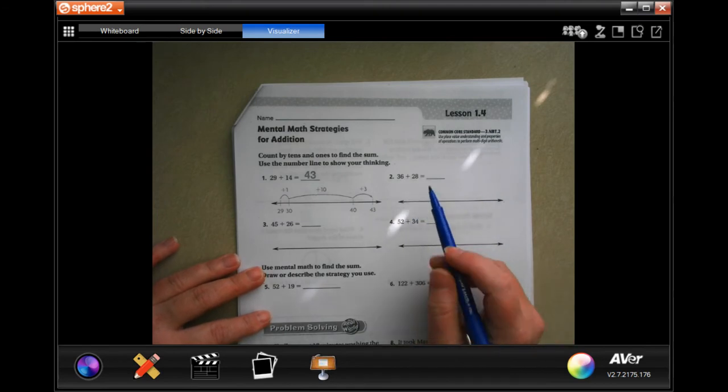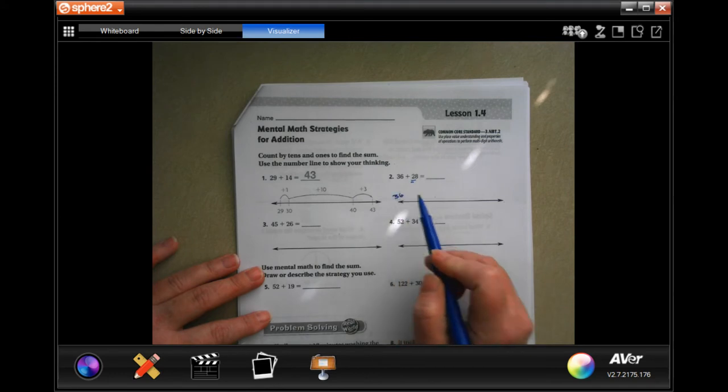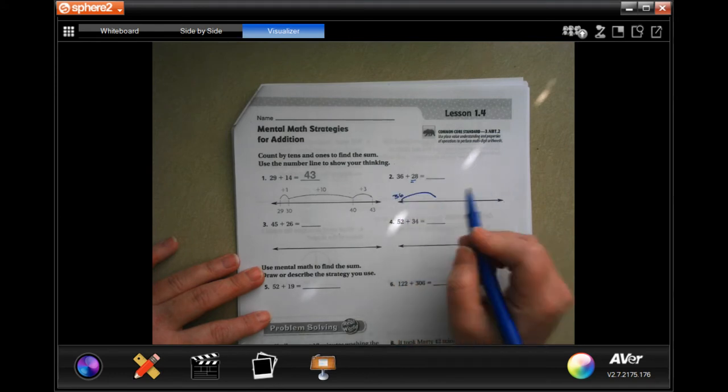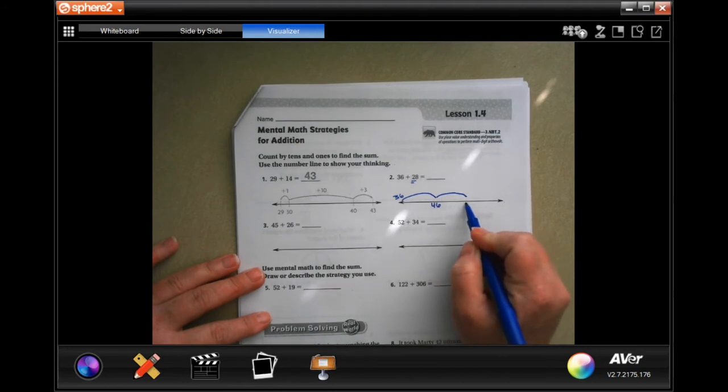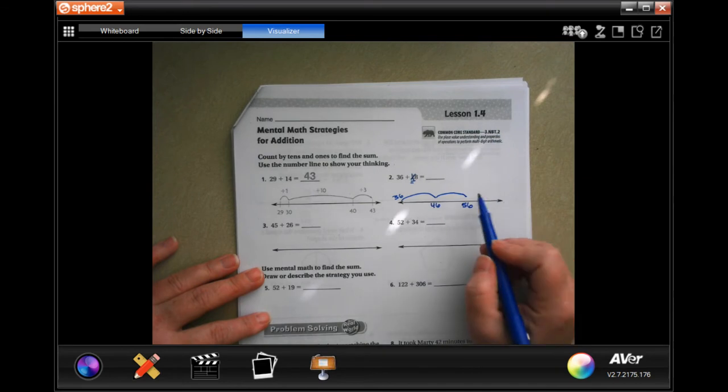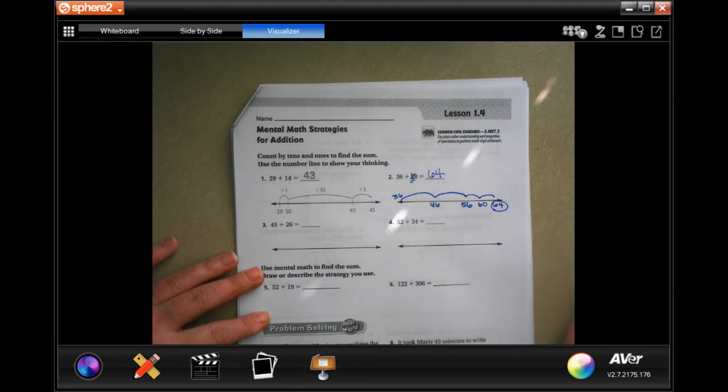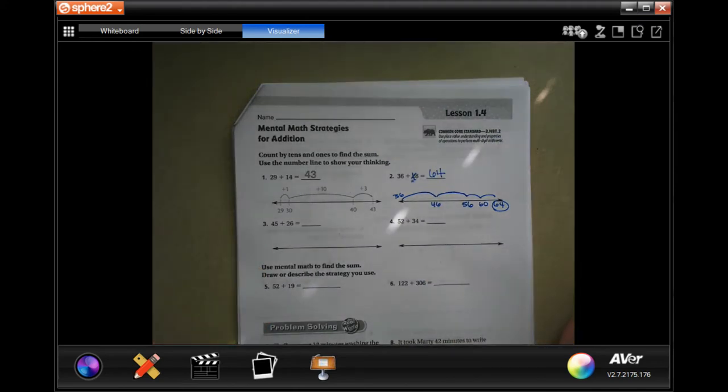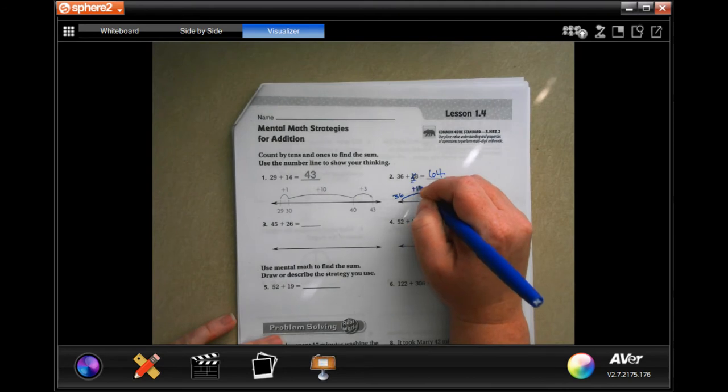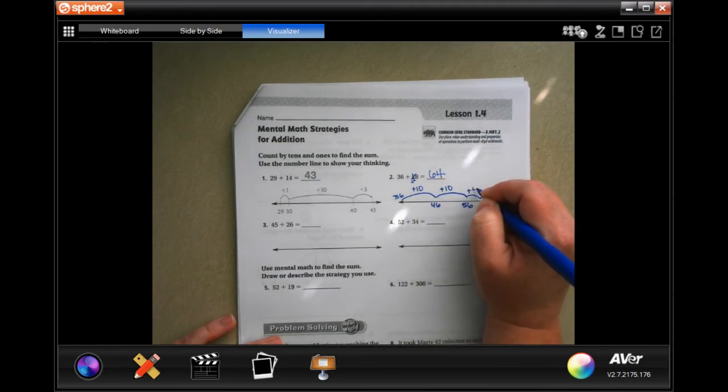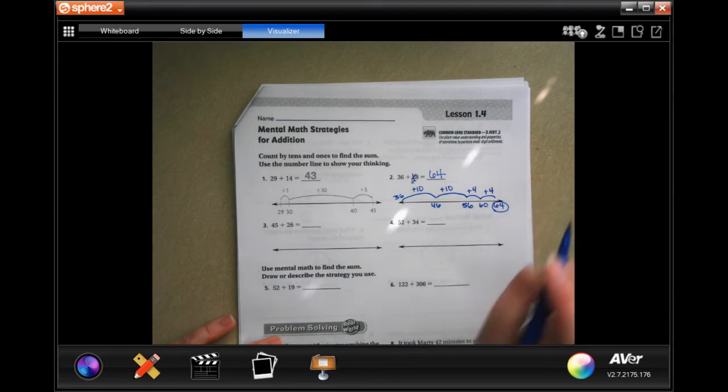So all we're doing here is we're going to add 21. We're going to go from 36, we're going to go 46, another one to 56, and that takes care of our 20. Now we just need to add eight. Well, adding four gets us to 60, and then adding four more gets us to 64, and that's our answer. So this is a plus 10, a plus 10, a plus 4, and a plus 4.